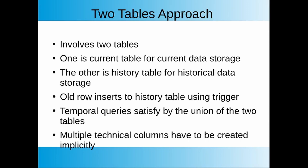The two-table approach involves two tables: one for current data storage and the other for history data. One big advantage of this approach is that non-temporal queries — which are the most frequent queries — are not affected by history data because they only access the current table. But nowadays you can achieve similar performance by partitioning. In this approach, all records generated by delete and update operations are inserted to the history table using a trigger, and multiple columns have to be created implicitly to make the correlation between current and history records.